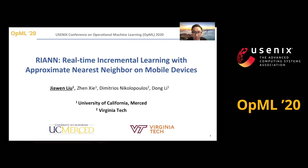Hi everyone. My name is Jiawen Liu, and I am from University of California, Merced. My advisor is Professor Dongli, and we collaborate with Professor Dimitros Nikroporos at Virginia Tech. Today, I am very glad to present our work, RI-ANN: Real-Time Incremental Learning with Approximate Nearest Neighbors on mobile devices.